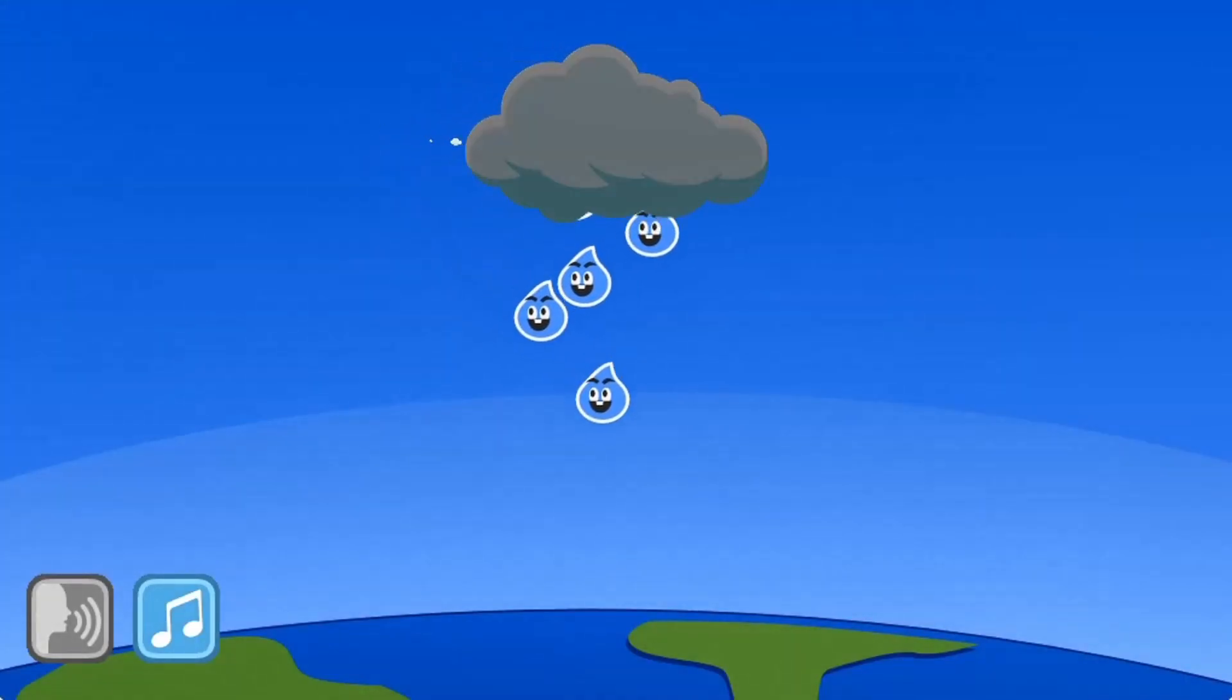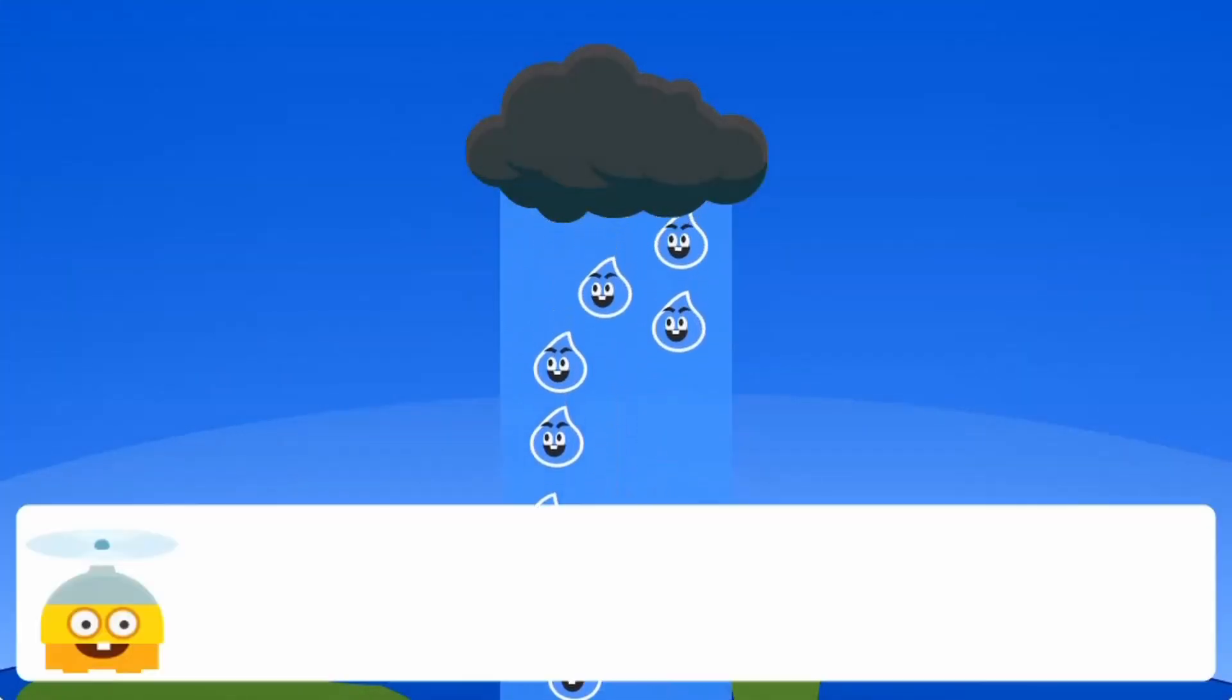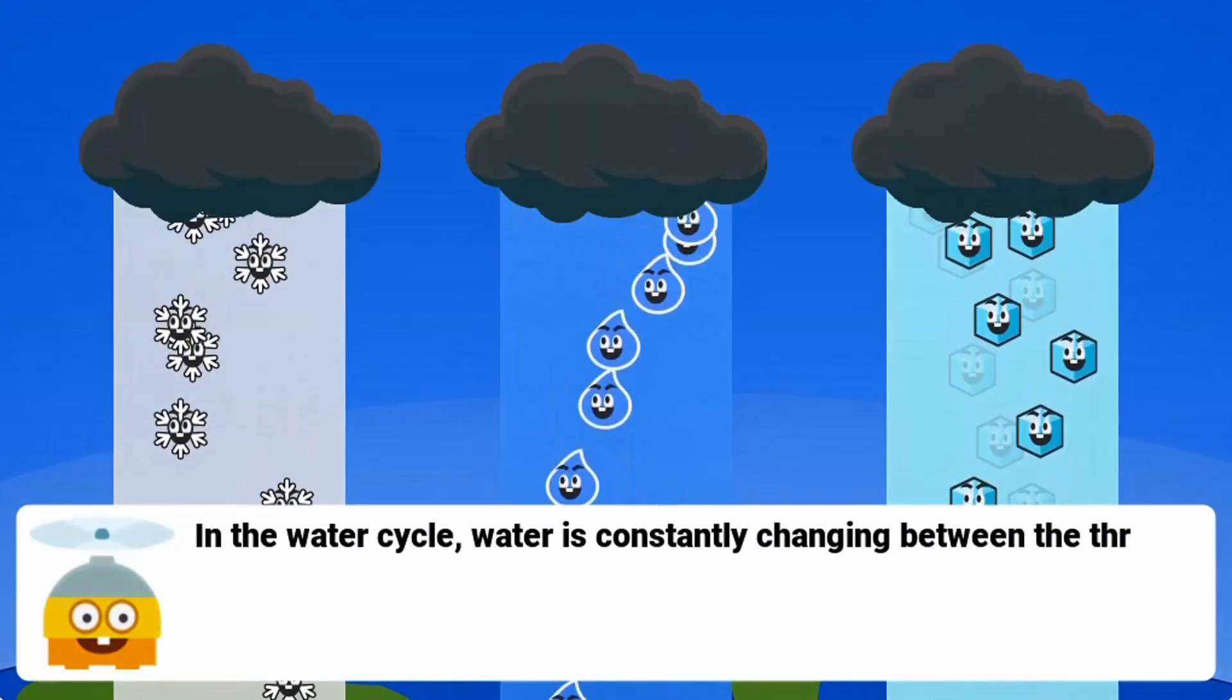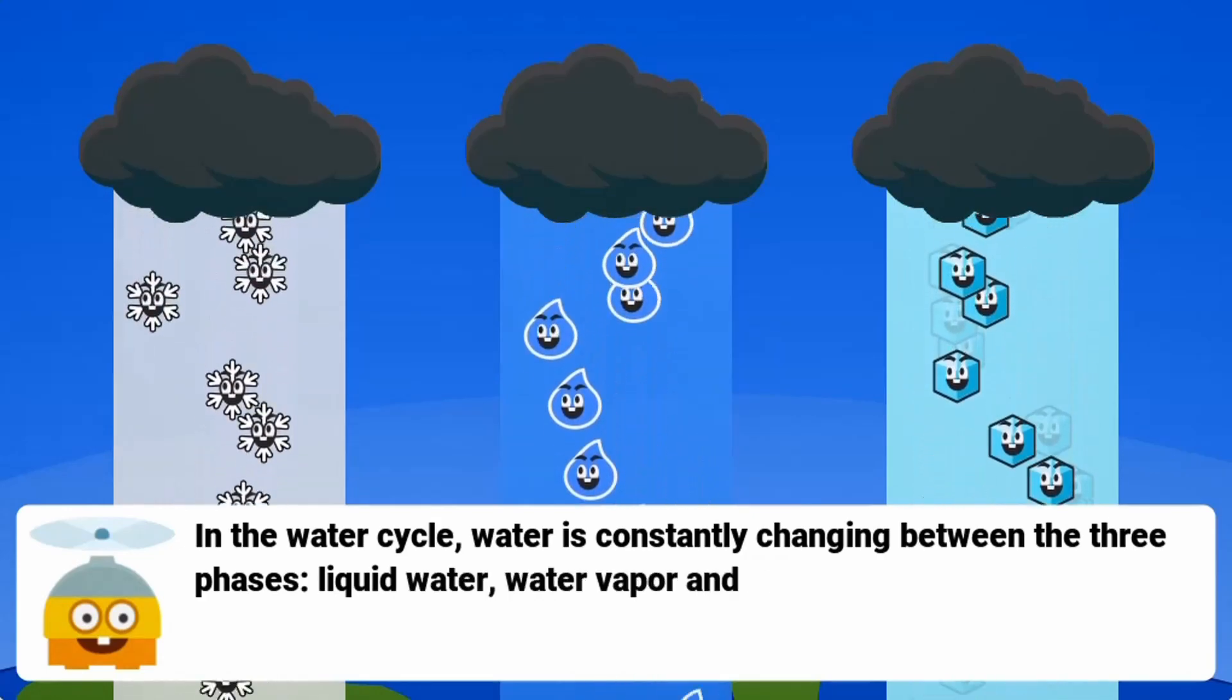Use your science skills to solve these water cycle tasks to move to the next level. Collect sunlight to evaporate, combine water vapor to form clouds, and then rain back down on Earth.